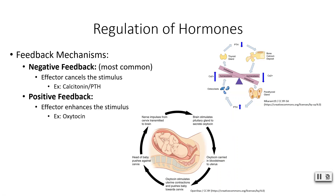Feedback loops also apply to hormone regulation. Negative feedback is the most common: we are trying to cancel the stimulus. For example, calcitonin works to lower blood calcium levels if they've gotten too high, and parathyroid hormone works to raise blood calcium levels if they've gotten too low. In positive feedback, the effector enhances the stimulus — for example, oxytocin during labor stimulates uterine contractions, and we enhance this cycle by releasing more and more oxytocin to drive more uterine contractions until labor and delivery are complete.